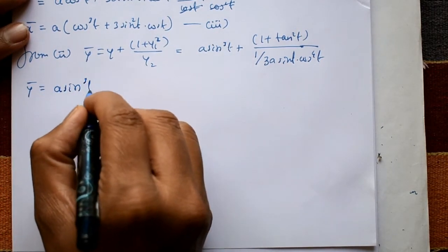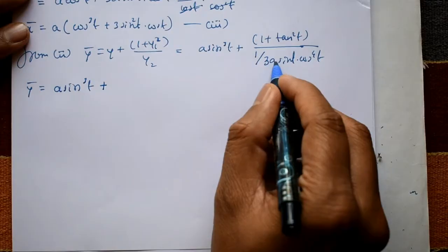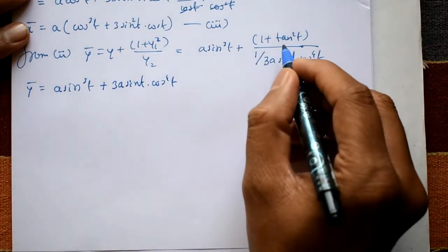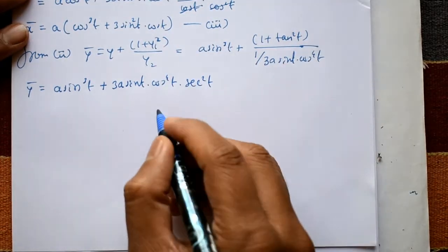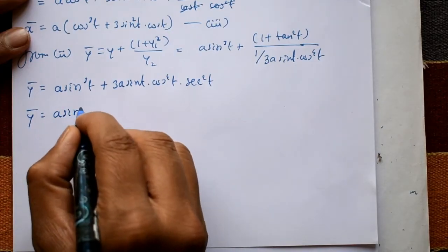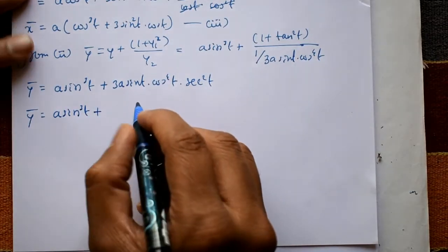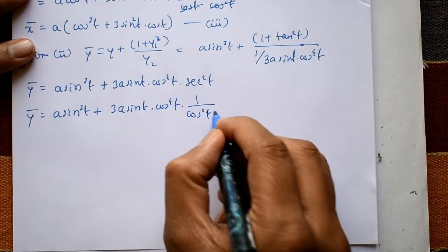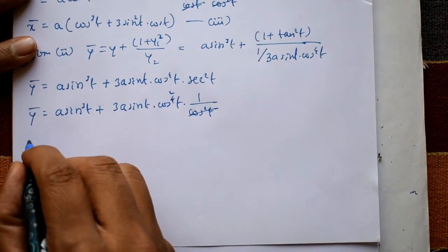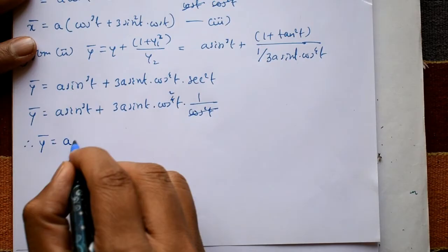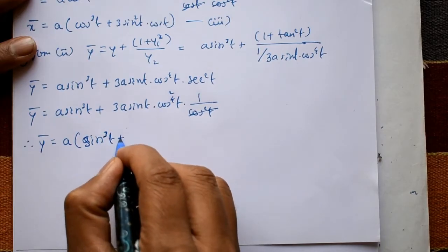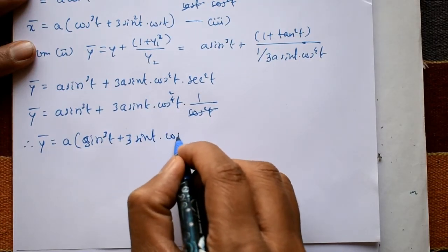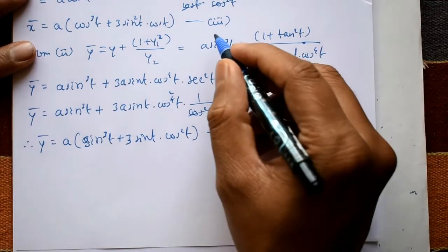Simplifying ȳ: first term is a·sin³(t). The second term becomes 3a·sin(t)·cos⁴(t)·sec²(t) = 3a·sin(t)·cos²(t), since cos⁴(t)/cos²(t) = cos²(t). Therefore ȳ = a·(sin³(t) + 3·sin(t)·cos²(t)). This is equation 4.